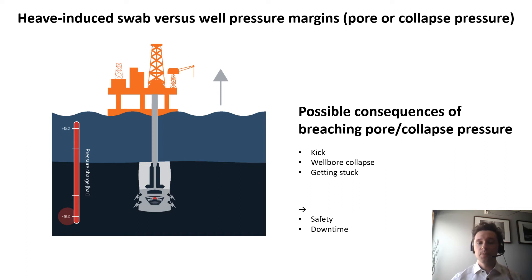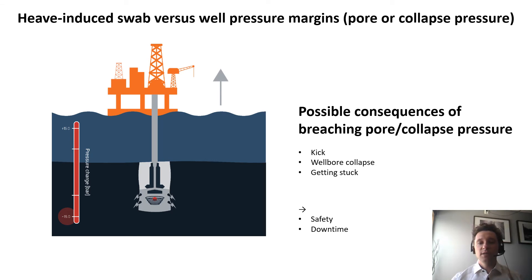The consequences of breaching pore or collapse pressure can be a kick, or wellbore collapse if your wellbore is a bit unstable and you swab it — the wellbore might collapse, leading to getting stuck with whatever you have in the well, whether it's a drill string, completion string, or liner casing. The ultimate consequences are a safety risk in case of a kick and downtime in case of a wellbore collapse.